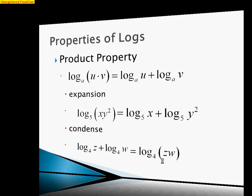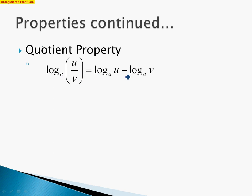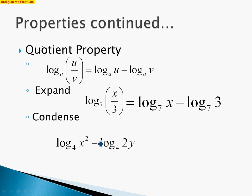Our next property is the quotient property. Here we have a log base a with two things being divided as the quotient, and this can be expanded with a subtraction. For a quick example, log base 7 of x divided by 3 can be expanded as log base 7 of x minus log base 7 of 3. Going the other way with condensing, the subtraction condenses down to one logarithm: log base 4 of x squared over 2y.